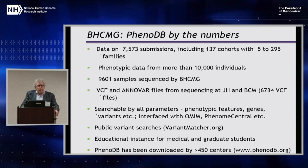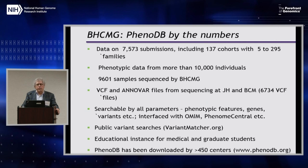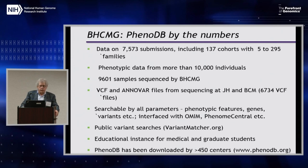Each CMG center has developed a database to track and evaluate their patients. I'm going to show you a Baylor-Hopkins-centric database called PhenoDB. It currently has 7,573 submissions — a submission may be one family or a cohort — with more than 10,000 affected individuals in the database. We've sequenced around 9,600, and the VCF files are stored there. This database is searchable by all parameters: phenotypic features, genes, and variants. It's interfaced with OMIM, Phenome Central, and other tools, giving Baylor cases the chance to be searched by Hopkins and vice versa.